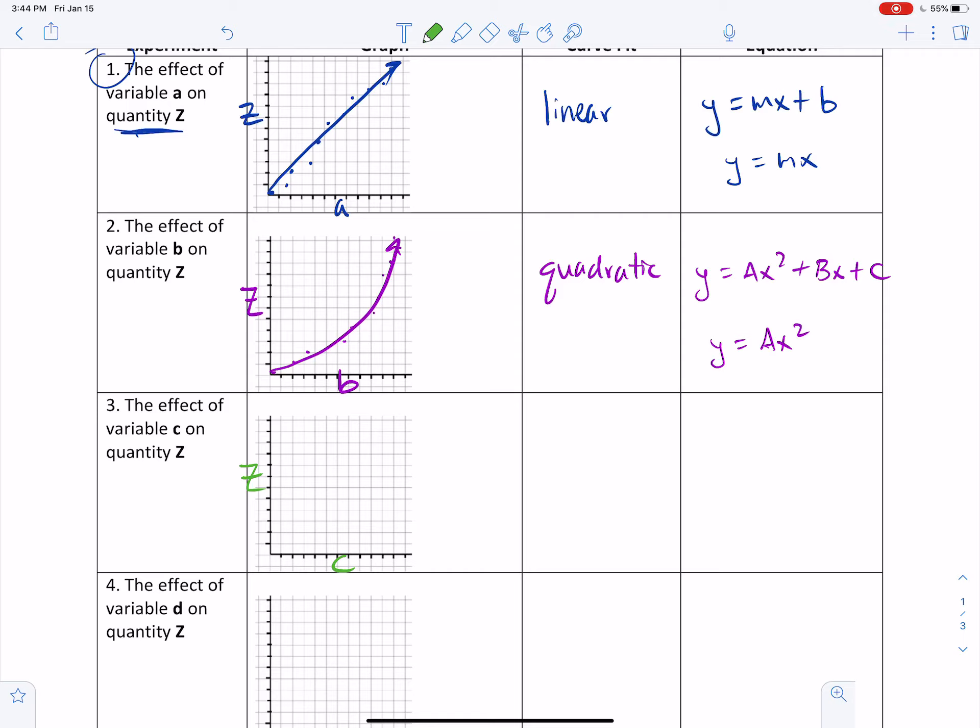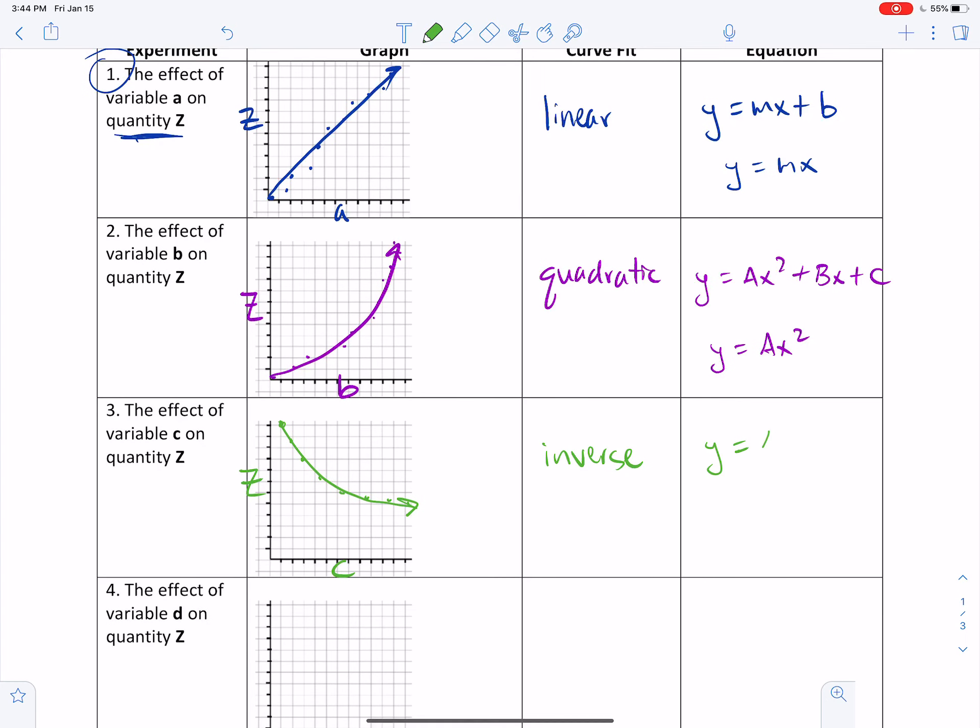Now you notice that when C is very, very small, you actually don't get numbers close to zero. You actually get really, really large values. So you're actually starting up here. And then as you begin to increase C, you notice that the value of Z starts to drop. But then as you continue to increase C, the value actually starts to taper off kind of like this. This is a classic inverse relationship. And the equation of that line is y equals a over x, or sometimes 1 over x, right? And in this case, a would just be equal to 1. The idea is that as this variable increases, this variable actually decreases.